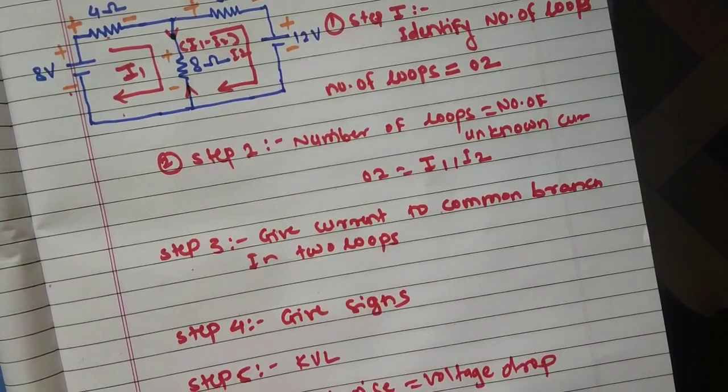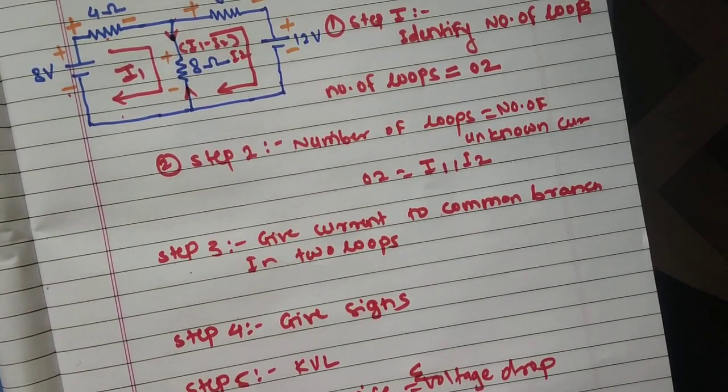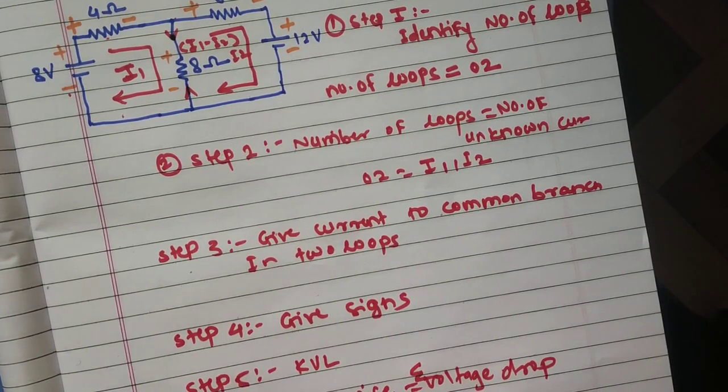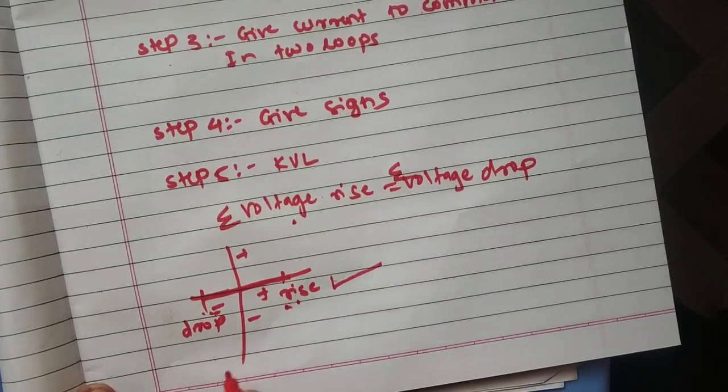So the summation of voltage rise is equal to summation of voltage drops. Every step side, Kirchhoff's voltage law problem is solved like this. And step six is what?